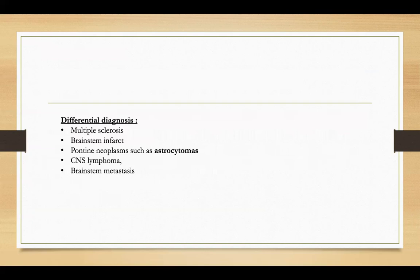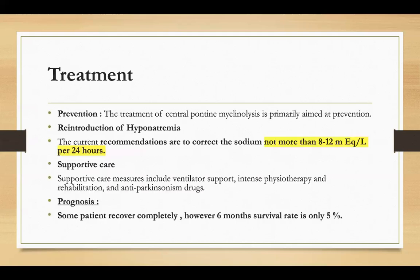These are the differential diagnoses for central pontine myelinolysis and extra pontine myelinolysis: multiple sclerosis, brainstem infarct, pontine neoplasms such as astrocytoma, CNS lymphomas, and brainstem metastasis. Treatment of central pontine myelinolysis is primarily aimed at prevention and reintroduction of hyponatremia. The current recommendations are to correct sodium by no more than 8 to 12 mEq per liter per 24 hours. Supportive care measures include ventilator support, intensive physiotherapy and rehabilitation, and antiparkinsonian drugs.